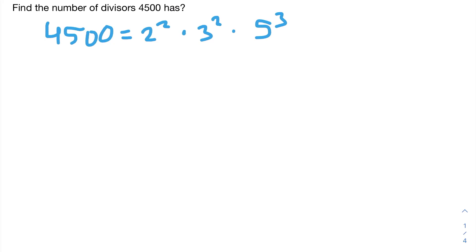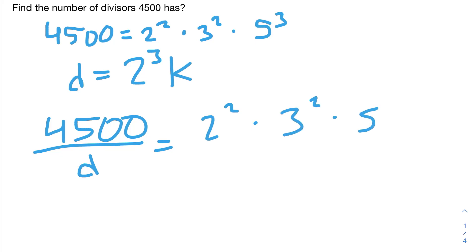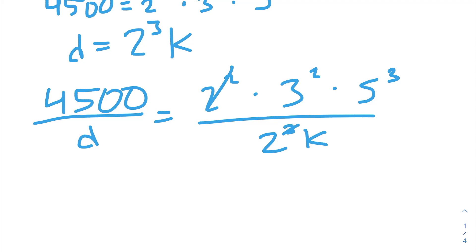Now, let's take a look at what D could be. If D is equal to 2 to the power of 3 times an integer K, then it can't be a divisor of 4,500. Because if D is a divisor of 4,500, 4,500 has to be divisible by D. And if we have 2 to the power of 3 in D, then we can never completely simplify this fraction. We'll still have a 2 left in the denominator, and we'll have no way of getting rid of it.